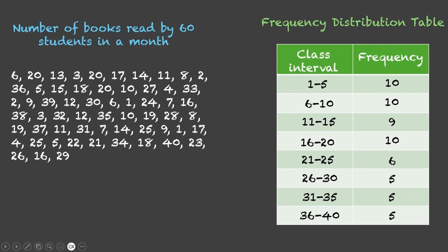And it looks something like this. This entire data set has been arranged into these groups, which are also called classes. Now, if we talk about this first group, it has number of students who read books from 1 to 5 range. That is 1, 2, 3, 4 or 5 books. And if we look at this table, these are the students who read 1 to 5 books.